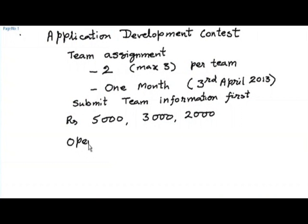We might club some of these remote centres with very small attendance and participation and announce rewards across this group of centres. Please remember, all applications that you develop will be released in open source. The particular licence we use is called CCBY — the Creative Commons licence by attribution. What it means is that whenever you submit your application — the code, the documentation, and the executable — it will always be attributed to you.